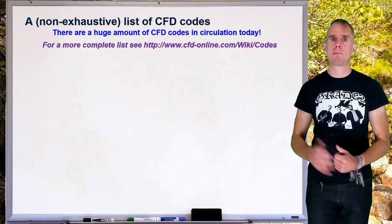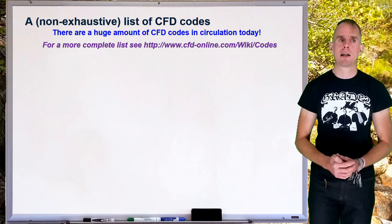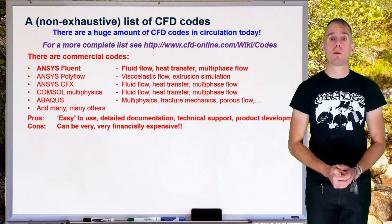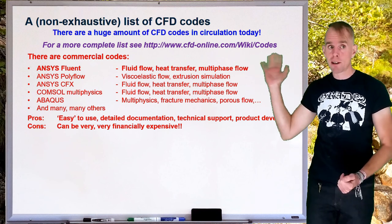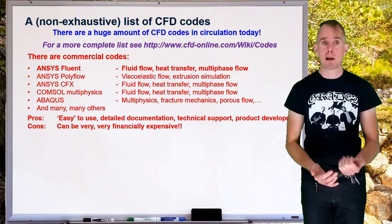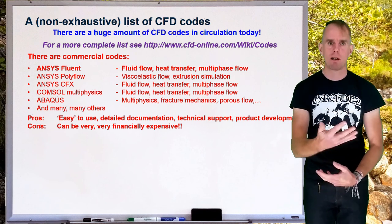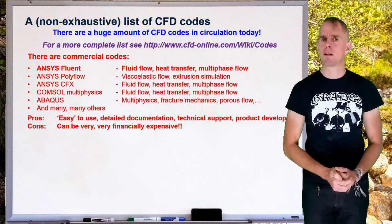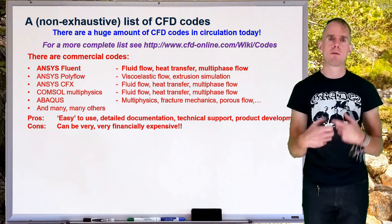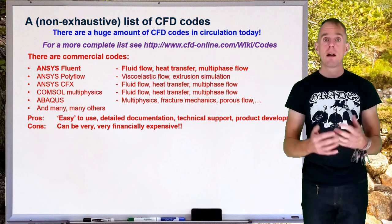So let's think about what codes are out there today. Broadly speaking, you can divide them into two categories. There are, first of all, the commercial codes. In this course, you're going to be using ANSYS Fluent, which is highlighted in bold on the whiteboard. ANSYS Fluent is a very powerful code. It can couple heat transport with fluid dynamics, with multi-phase flow, with mass transfer, and it's rather expensive to license. With a code that is very general, very powerful, and in ANSYS Fluent's case relatively easy to use, comes expense.